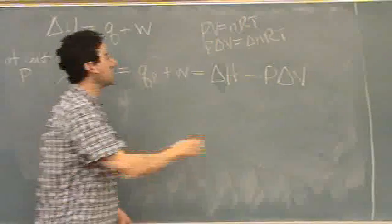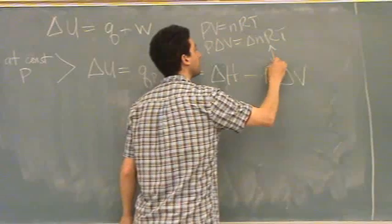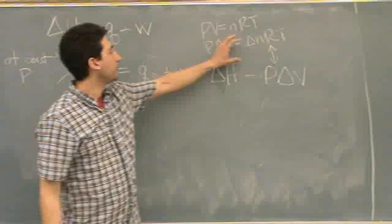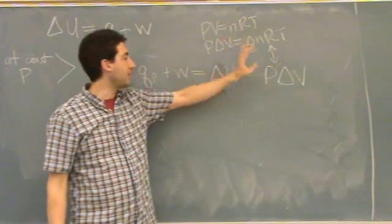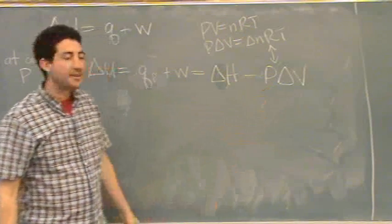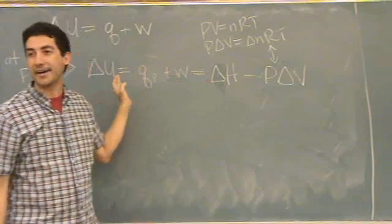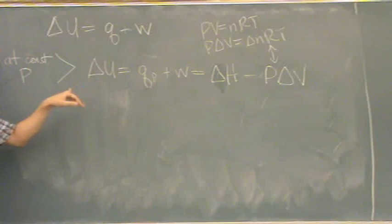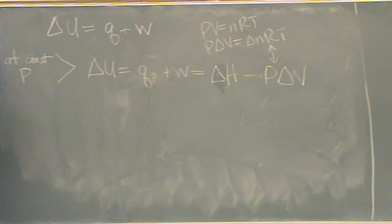So this could be substituted. So a type of question you could get would be, you have N, R, and T, and you'd find the work. You're given enthalpy, so you add it to find the delta U. That sort of thing. They're pretty simple, just addition problems.